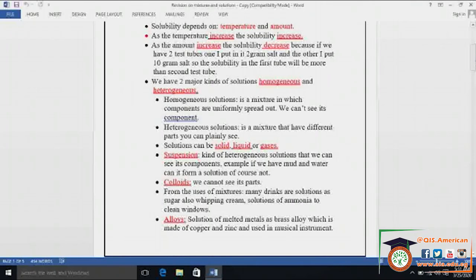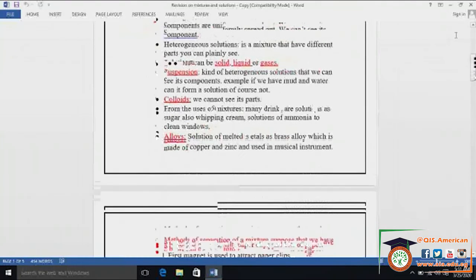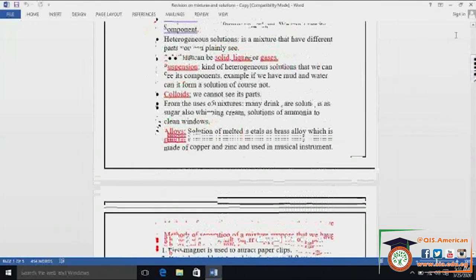So we will revise on the suspension. Take care from suspension. Colloids. What about the alloys? Remember, alloys are solution of melted metals. Remember, brass alloy, which is made of copper and zinc and used in musical instruments, guitar, violin, whatever.